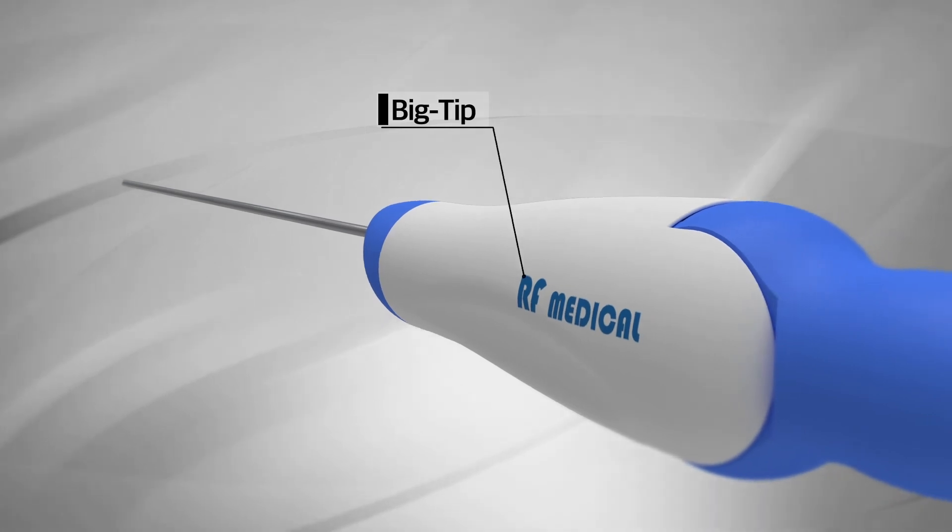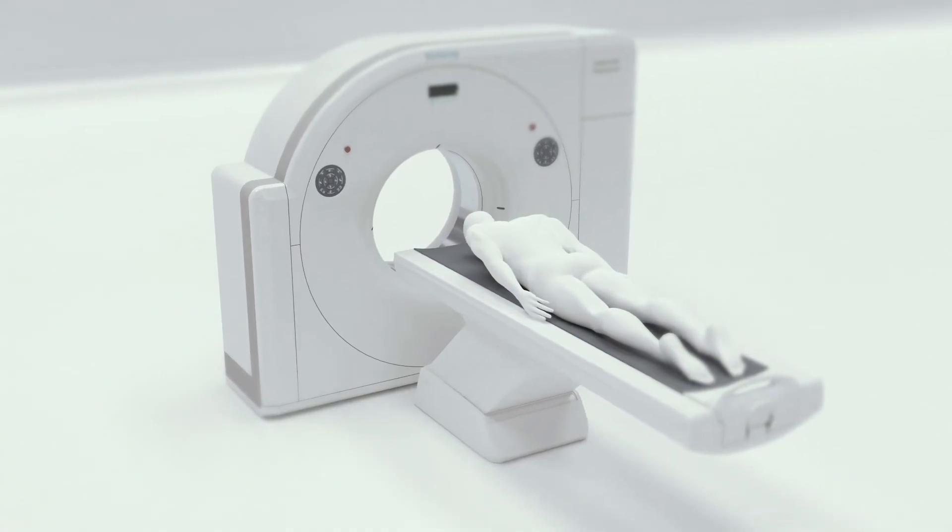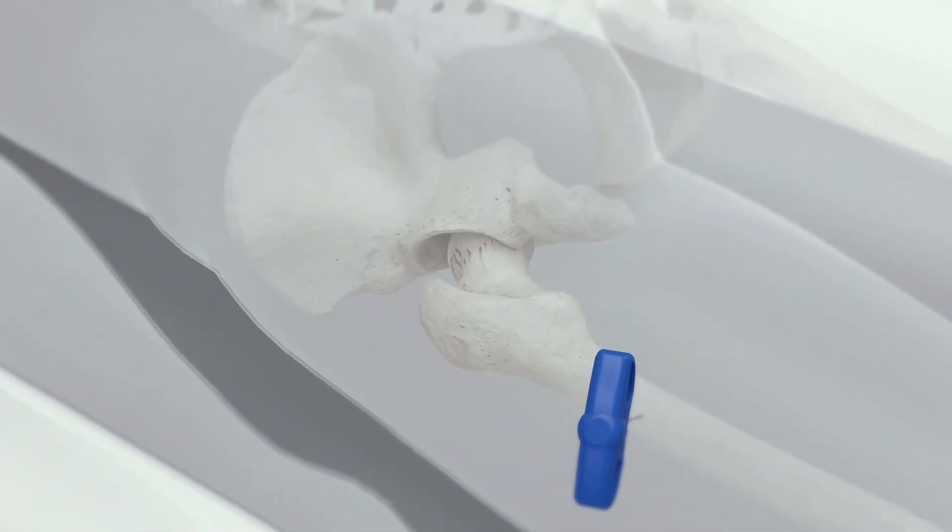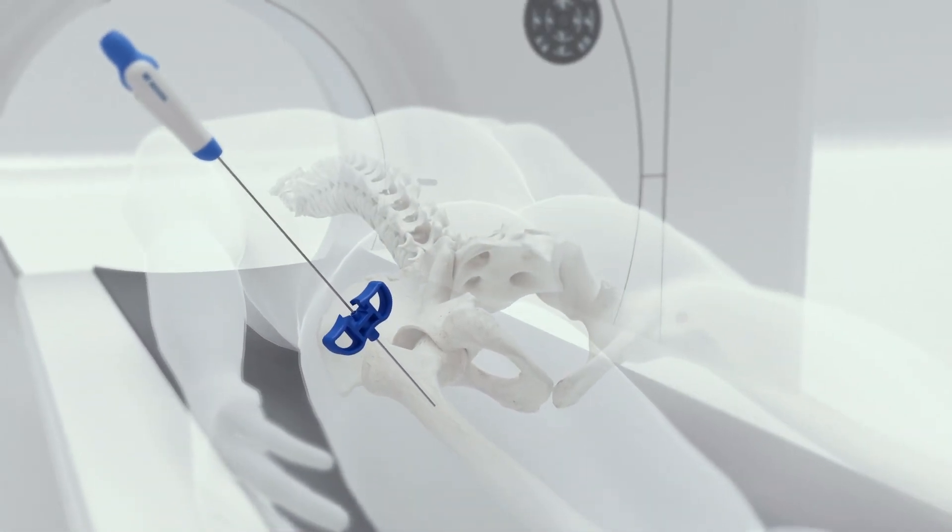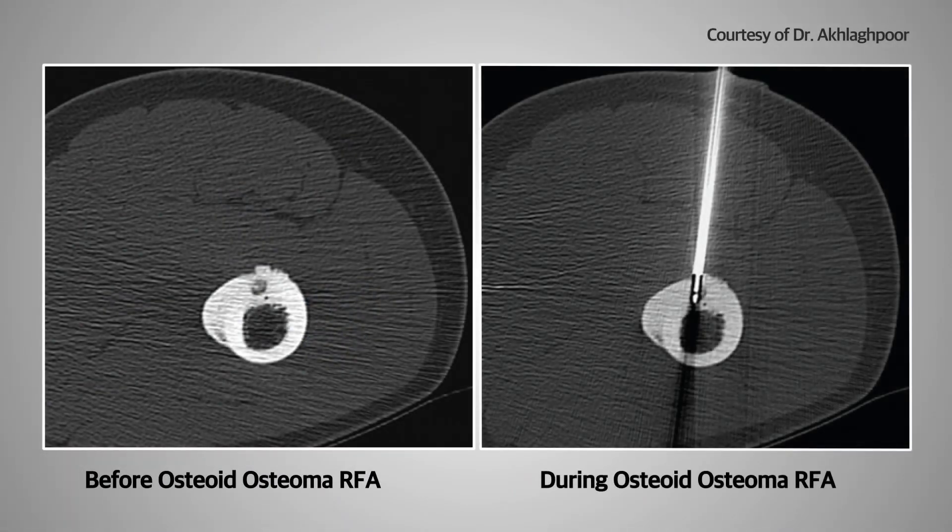Radiofrequency ablation of osteoid osteomas can be done with the Big Tip electrode and VCT electrode. For the radiofrequency ablation of osteoid osteomas, a practitioner needs to ablate only the nidus of the osteoid osteoma, which is why the Big Tip and VCT electrodes with short active tip length are sufficient to obtain spherical and predictable ablation areas.